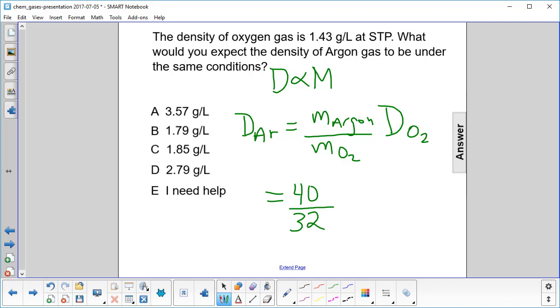And then we get the density of oxygen over here, 1.43 grams per liter. We carry out the multiplications and we get 1.79 grams per liter for argon.